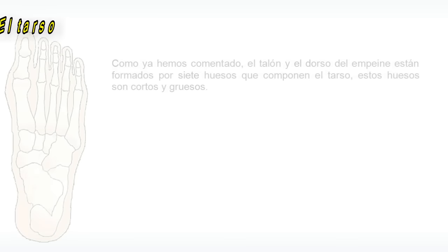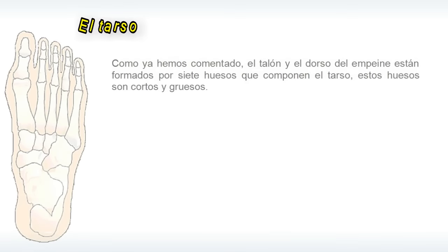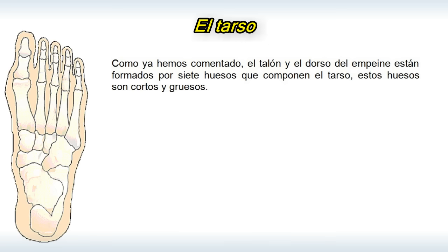El tarso. Como ya hemos comentado, el talón y el dorso del empeine están formados por siete huesos que componen el tarso; estos huesos son cortos y gruesos.